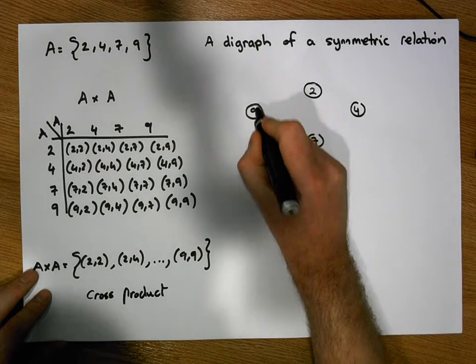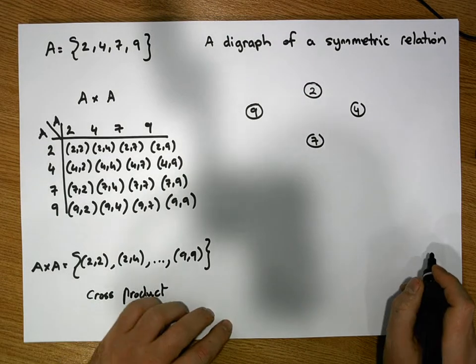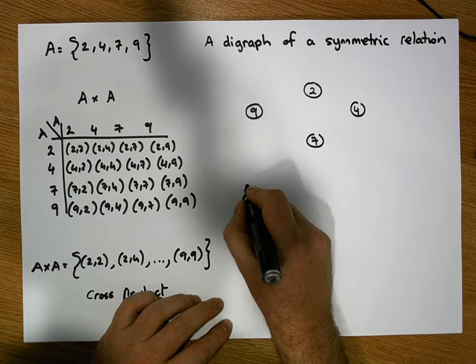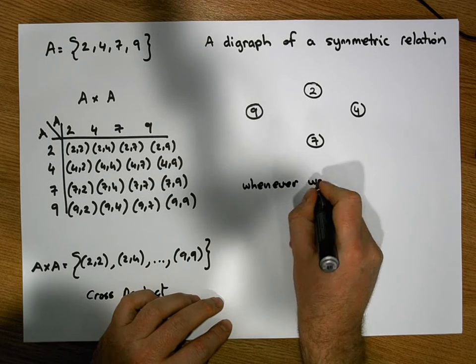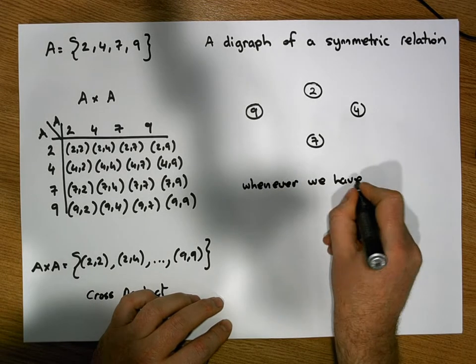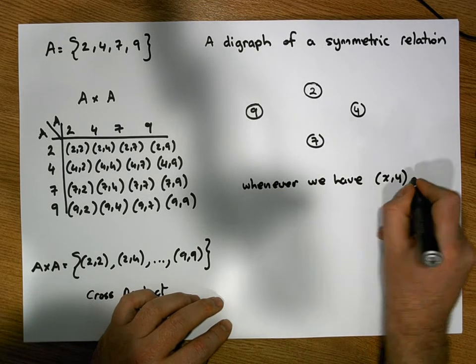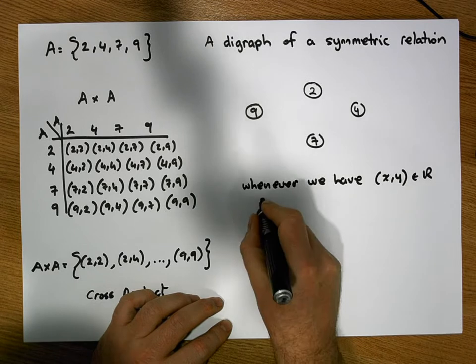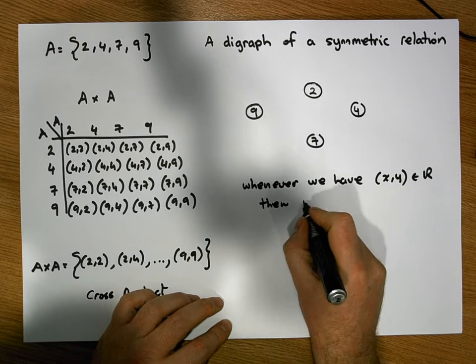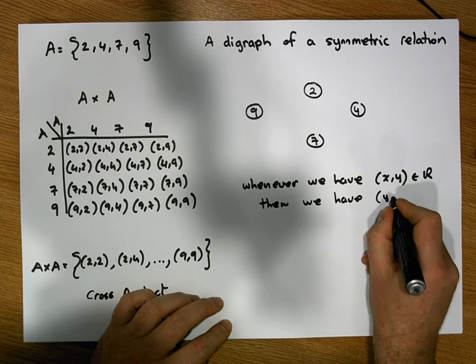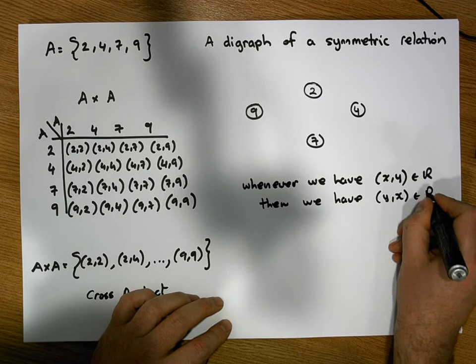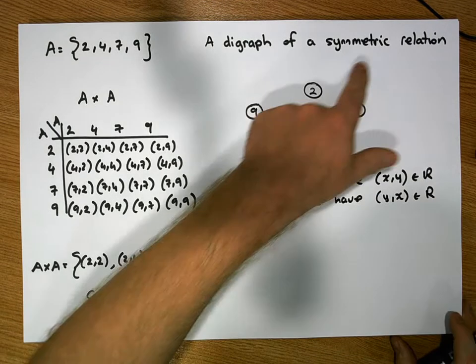So a symmetric relation is a relation that whenever we have an ordered pair (x,y) being in the relation, then we have its flip (y,x) being in the relation. And that's really important for symmetric relations.